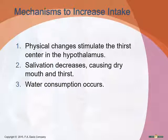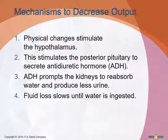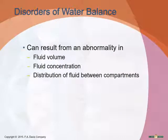To decrease output, the same factors — decreased blood pressure and higher sodium — also trigger mechanisms to decrease urine output. Your posterior pituitary will secrete antidiuretic hormone (ADH), which prompts the kidneys to reabsorb more water, making less urine, and fluid loss slows until water is taken in.